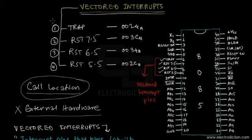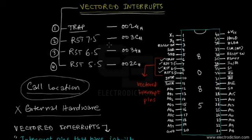The Trap pin is an interrupt that you cannot control in any way. If there is any interrupt input falling on the Trap pin, it is directly recognized by the 8085. The Trap pin cannot be enabled, disabled, or controlled in any way.